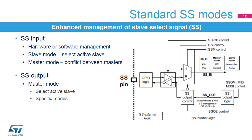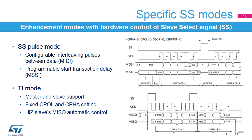As a slave input, it is used to identify itself as the active slave for communication. As a master input, it signalizes a potential conflict between masters in a multi-master system. The SS only works as an output in master mode and is managed by hardware in a standard or specific control mode. Additional slave select outputs can be provided by the GPIOs under software control. There are a few enhanced modes when the slave select signal is under specific hardware control.